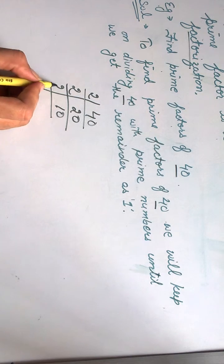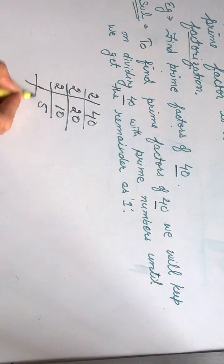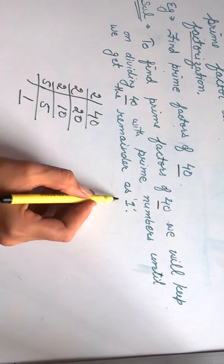Again, we divide it by 2. It gives us 5, and divide it by 5. It gives us 1 as remainder.